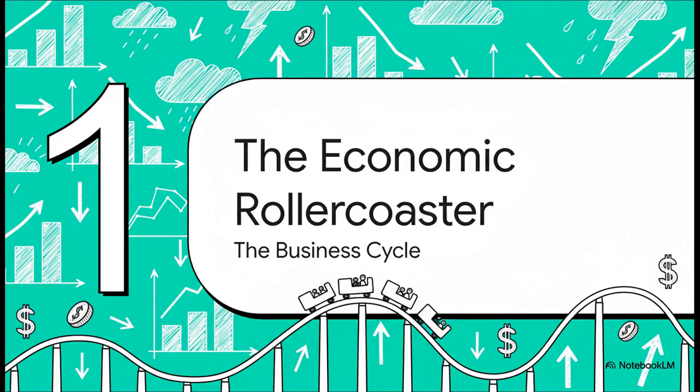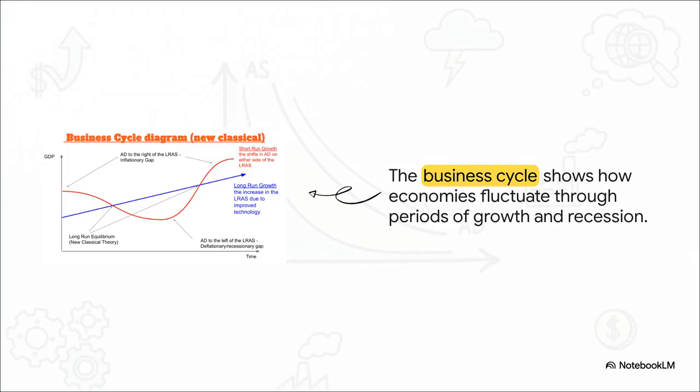We have all been there. You feel it, right? Those times when jobs are easy to find, everyone's optimistic, and then the other times when every headline is talking about a recession. This whole up and down thing actually has a name: the business cycle. In this graph here, it pretty much shows that natural rhythm of the economy. See those upward slopes? Those are expansions — that's when businesses are hiring, they're producing more stuff. And the dips? Those are recessions.